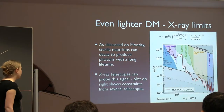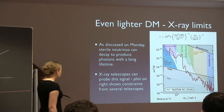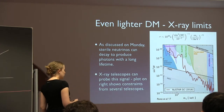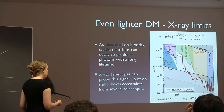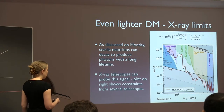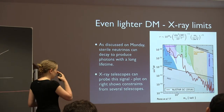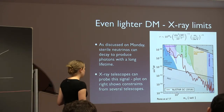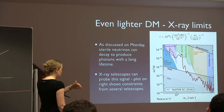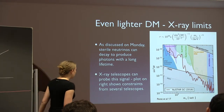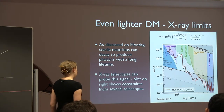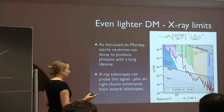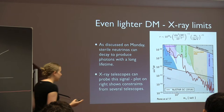Going down to even lower masses, we have constraints from the INTEGRAL telescope and the Chandra, NuSTAR telescopes. XMM, Nustar, and Suzaku basically cover the range from below a keV up to 100 keV. Putting these telescopes together, we can cover the whole range for thermal dark matter from the keV warm dark matter limit up to the 100 TeV unitarity bound.